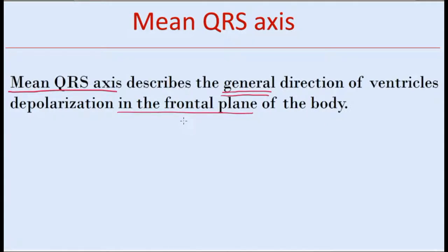Because the mean QRS axis is being defined in the frontal plane of the body, we will use only the six extremity leads which are pointed in the frontal plane.